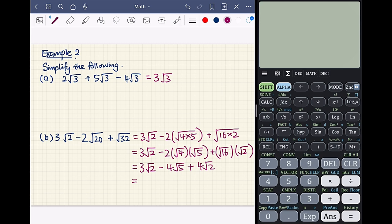The only thing that we can simplify here, because only the first and last term contains root 2, so we shall combine the first and last term. So 3 root 2 plus 4 root 2 will give us 7 root 2, then minus 4 root 5. And that is as simplified as it gets.